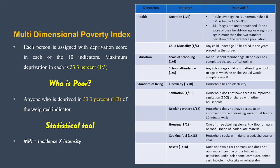The standard of living dimension uses several indicators. Sanitation considers whether households have proper facilities or share with neighbors. Drinking water accounts for the time taken to access water. Housing looks at whether floors, walls, and roofs are made of inadequate materials such as mud versus cement. Cooking fuel — households using dung, wood, charcoals, or coal are considered deprived. Assets include basic items like televisions, radios, and telephones, which are considered basic necessities.